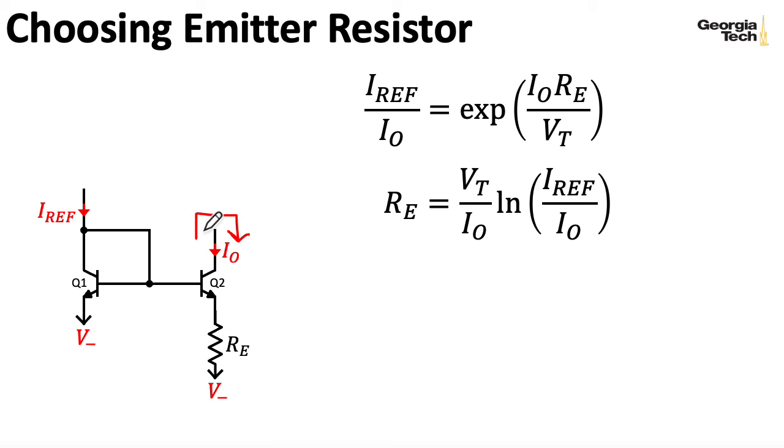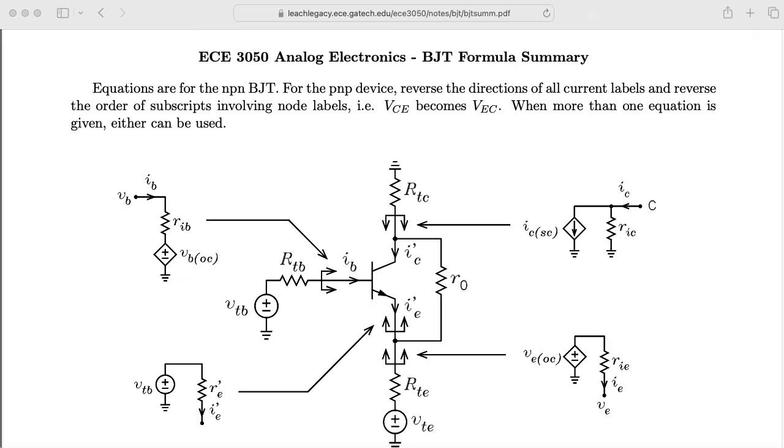Now, I would like to be able to find out what the small signal output resistance we get seen looking into the collector here. In order to compute that, I'm going to need to know the small signal thevenin equivalent resistance seen looking out of the base of Q2. Now, we need to treat Q1 very carefully. Strapping the collector to the base turns this into a diode-connected BJT. So you really need to think about it as a two-terminal device instead of a three-terminal device. Now, you might be tempted to look at Marshall Leach's formula sheet and say, OK, let's take the resistance seen looking into the base and take that in parallel with the resistance seen looking into the collector. But that doesn't work. That turns into nonsense if you connect the collector to the base. If you look at our derivations, you'll see that nothing winds up making sense.